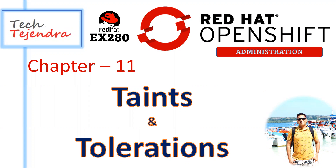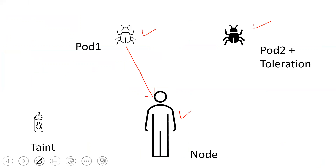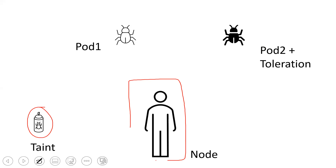This topic might be difficult for beginners, so let me start by understanding it with a real-world example. Suppose there is a man — the man's name is 'node' — and there are two bugs, pod one and pod two. Both bugs can currently touch the man because nothing is applied. In the normal scenario, bugs can touch the man. Now the man wants to get rid of these bugs, so he can apply a taint on his body.